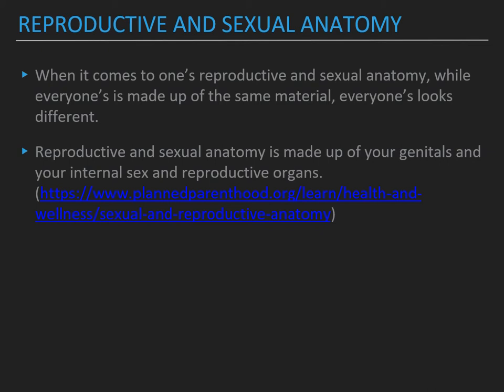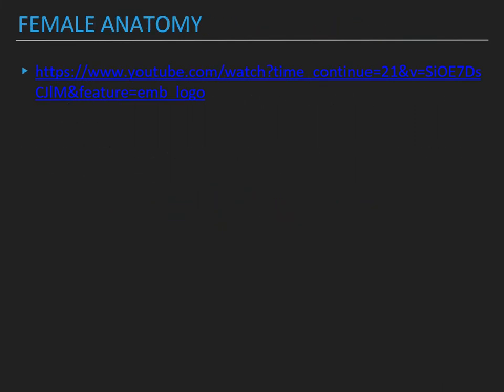Reproductive and sexual anatomy. When it comes to one's reproductive and sexual anatomy, while everyone's is made up of the same material, everyone's looks different. Reproductive and sexual anatomy is made up of your genitals and your internal sex and reproductive organs. This came from Planned Parenthood. Here is a video of the female anatomy.